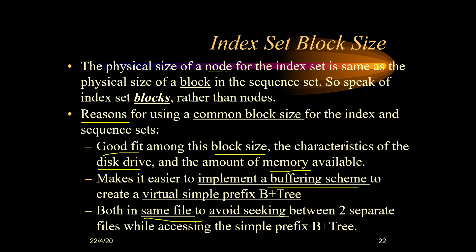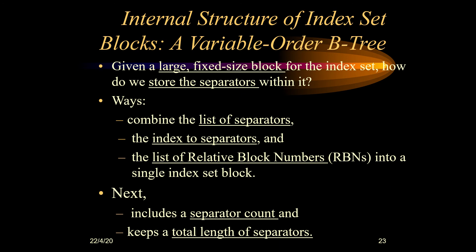The next topic is the internal structure of index set blocks. We can have fixed size blocks as well as variable size blocks. In the case of fixed size blocks, as we have already seen, we end up with problems like wastage of space, which is why we must also have an option of variable sized blocks. Here we have a large block of fixed size, and we need to consider what procedures and steps to keep in mind when saving separators for B+ trees.